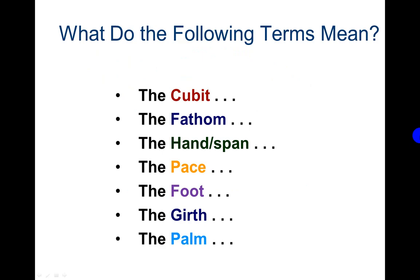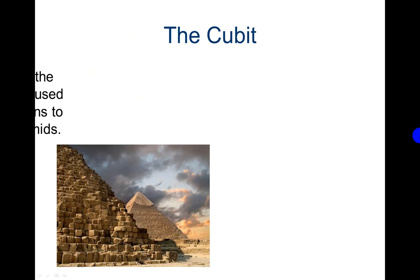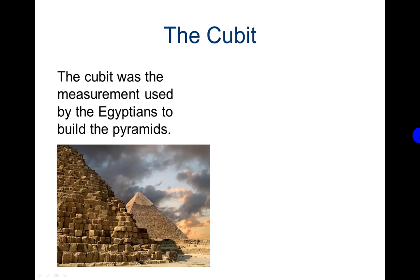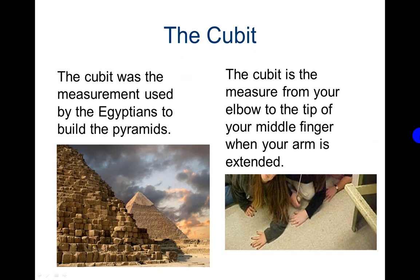Some of those you might have heard, some you may not have heard of before. The cubit was the measurement used by the Egyptians to build the pyramids. The cubit is the measure from your elbow to the tip of your middle finger when your arm is extended.